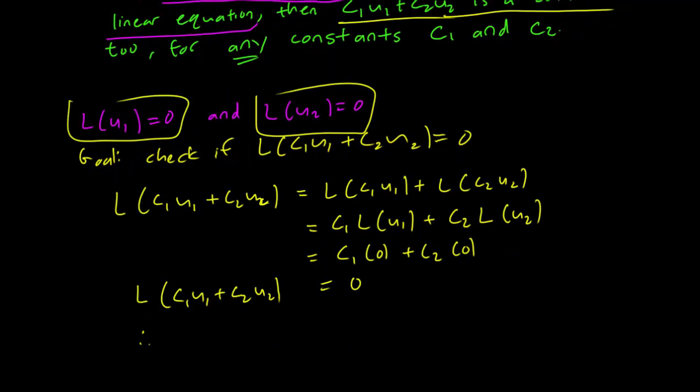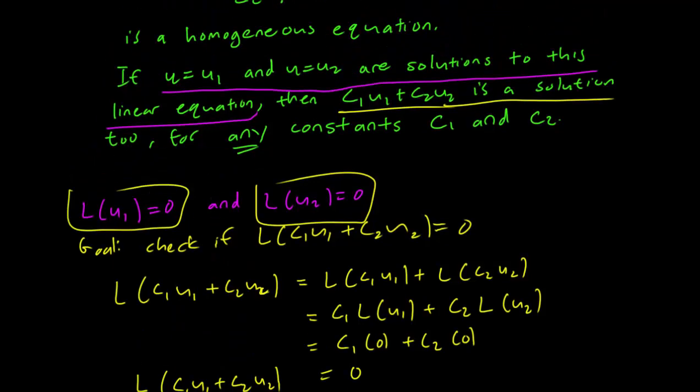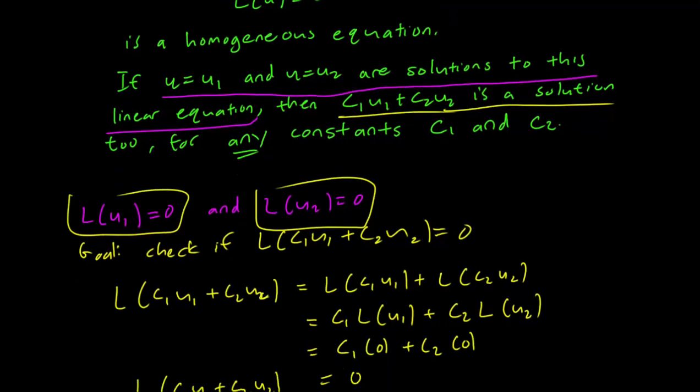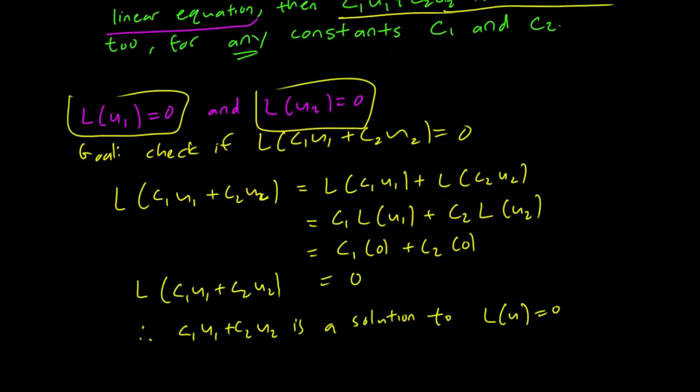Which implies that C₁u₁ + C₂u₂ is a solution to L(u) = 0. So indeed, if u₁ and u₂ are two functions that solve the linear equation that's homogeneous, then C₁u₁ + C₂u₂ is a solution as well.